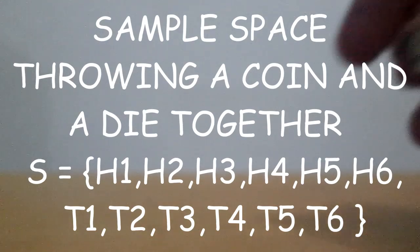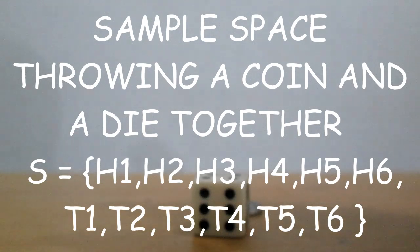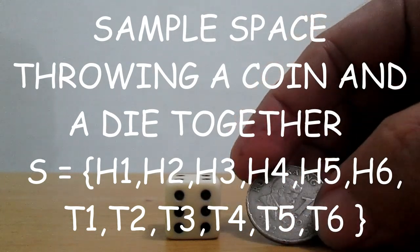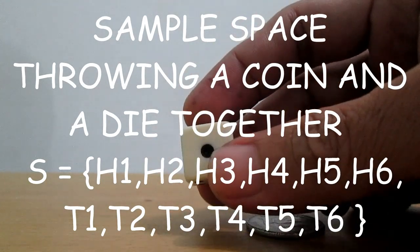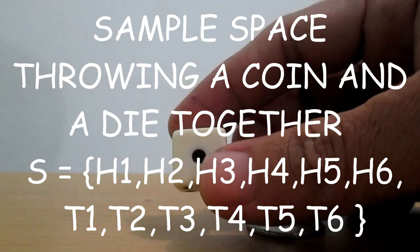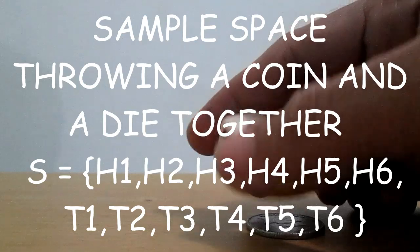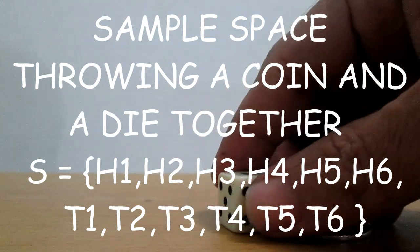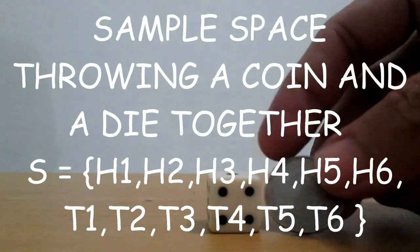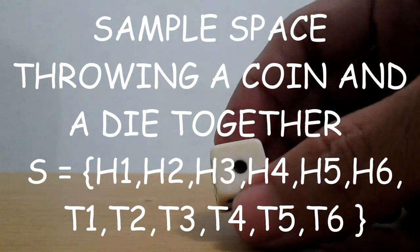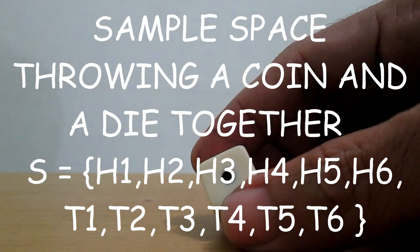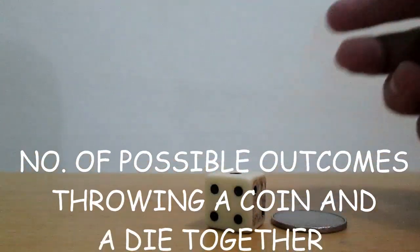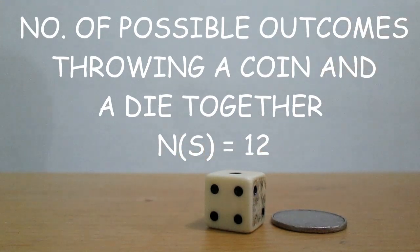The sample space in throwing a coin and a die together is S equals H1, meaning head on a coin and 1 on a die, H2, H3, H4, H5, H6, and T1, meaning tail on a coin and 1 on a die, T2, T3, T4, T5, and T6. The number of possible outcomes is 12.